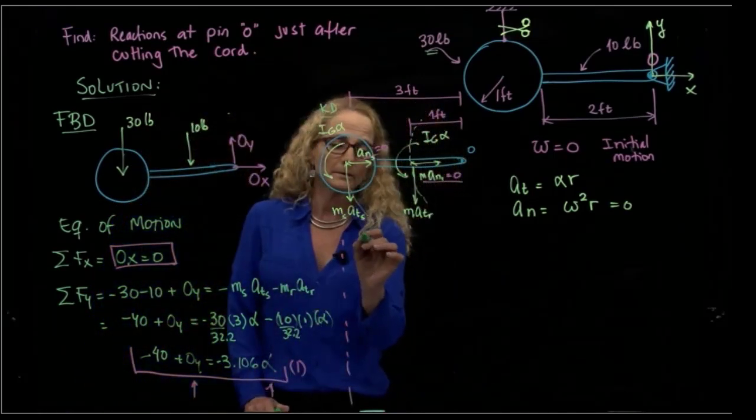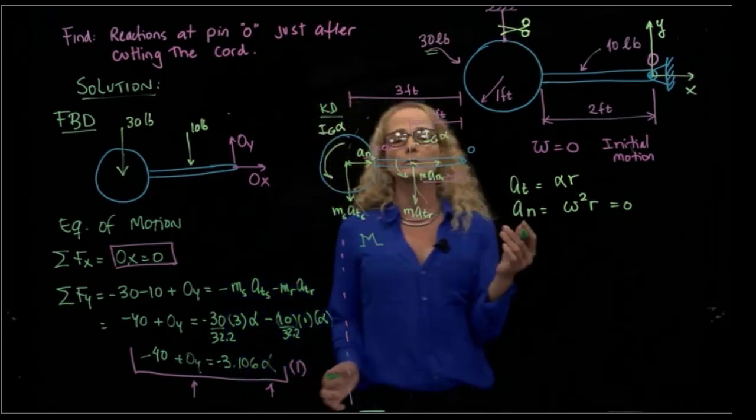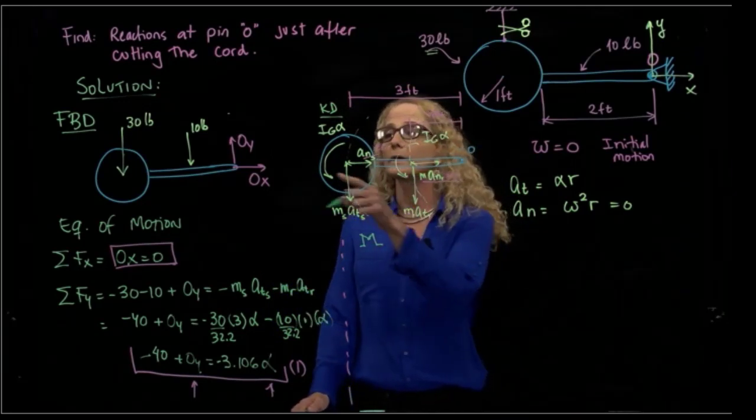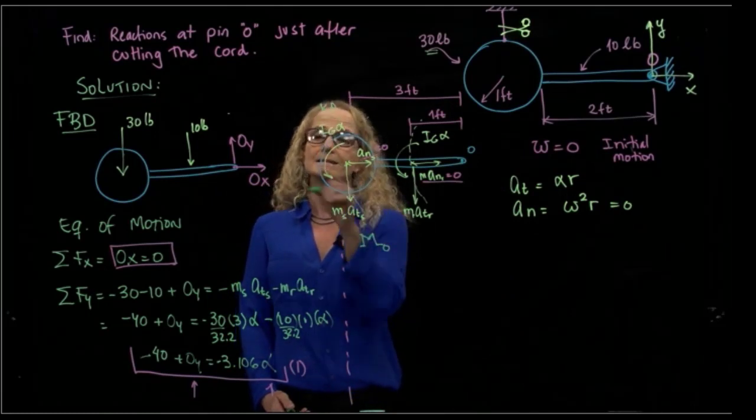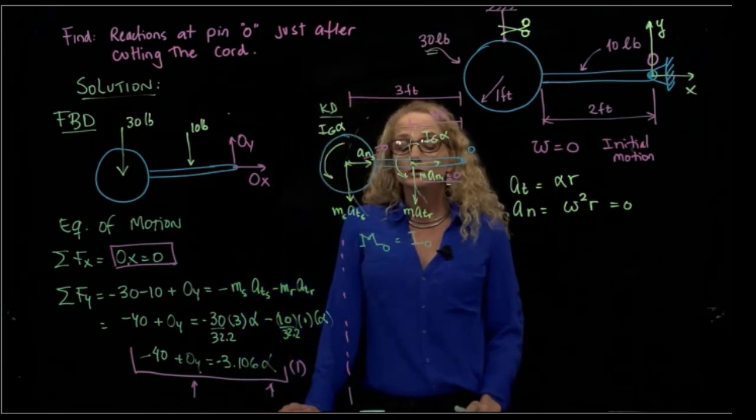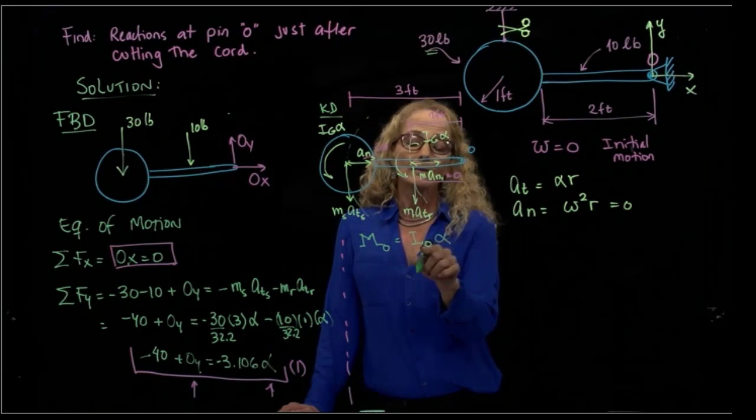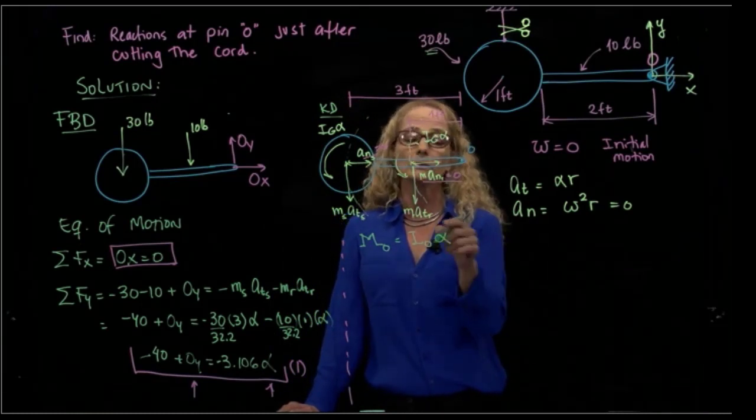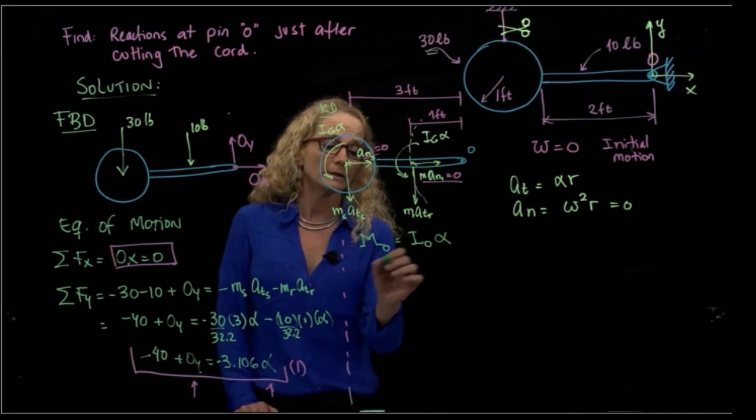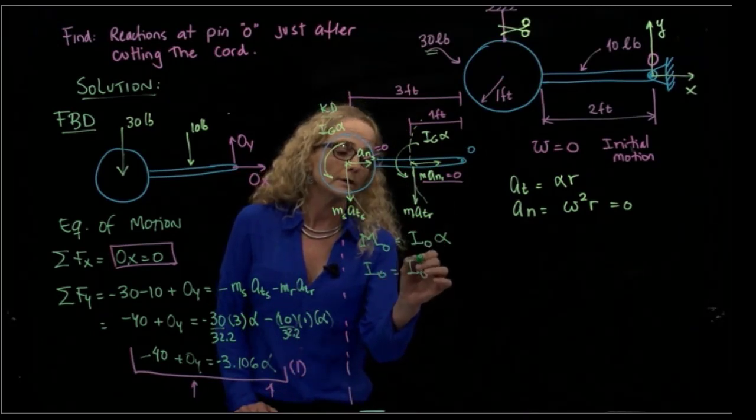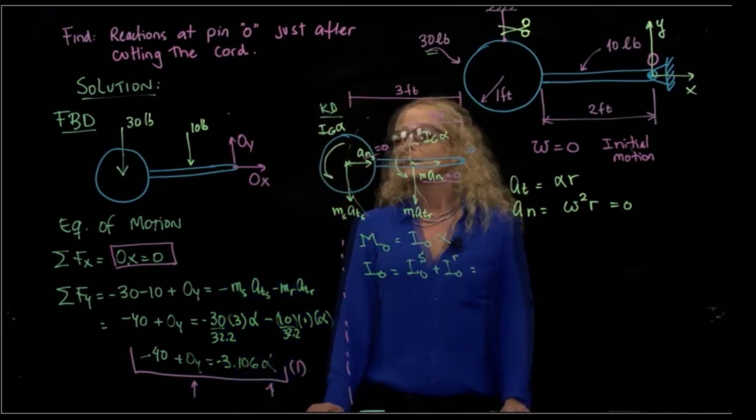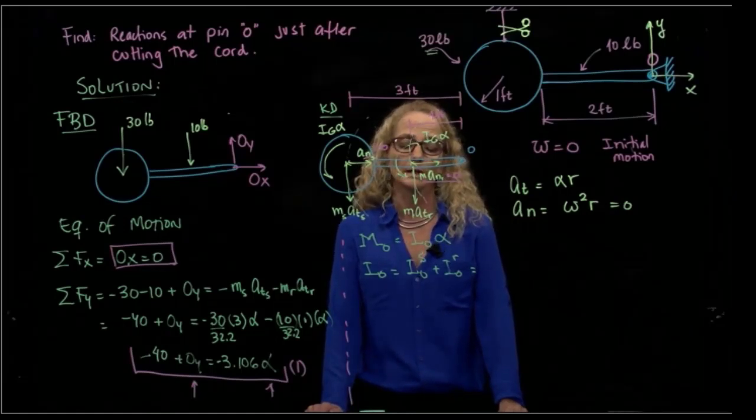Finally, we have the moment. We have to decide which point we like to take the moment about. We could calculate the mass of the whole figure, or we can calculate from O, which since that point does not have any motion, the equation is just the mass moment of inertia about that point times alpha. Here we have to calculate the addition of the sphere plus the rod, and we have to use the parallel axis theorem to calculate those two.